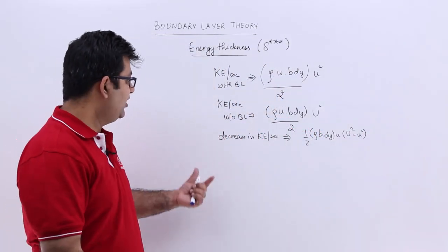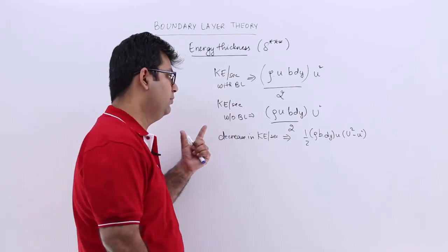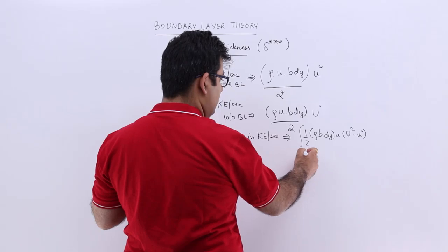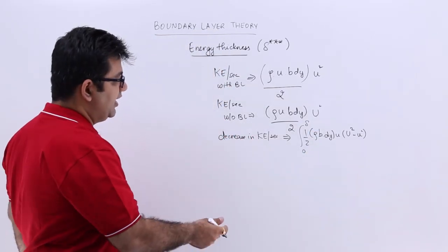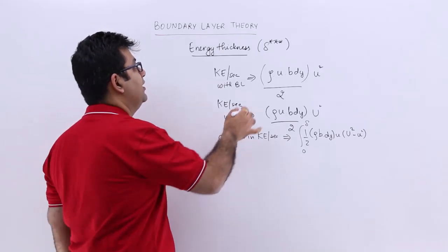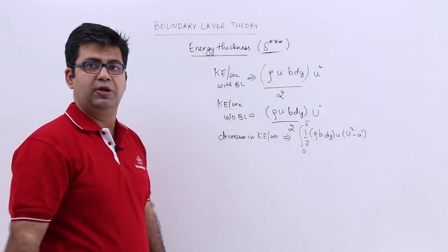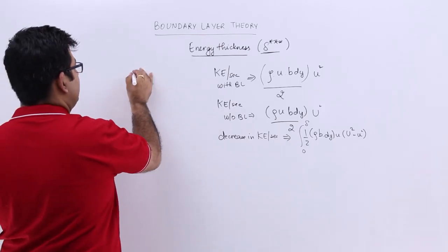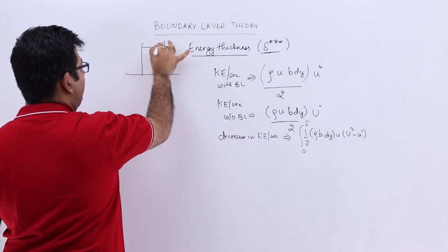If I find the expression for the entire section — as you may remember from the figure in the last video — I will have to integrate from 0 to delta. Now let us say we move the section up by a value delta triple star, so as to decrease the kinetic energy per second through a section where there is no boundary layer phenomenon.